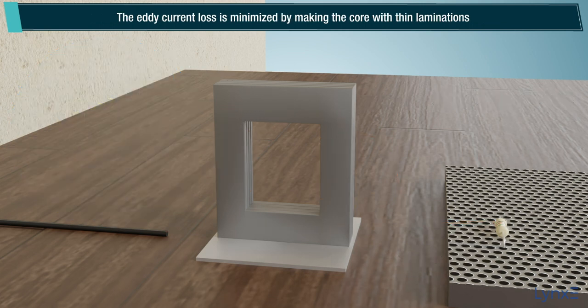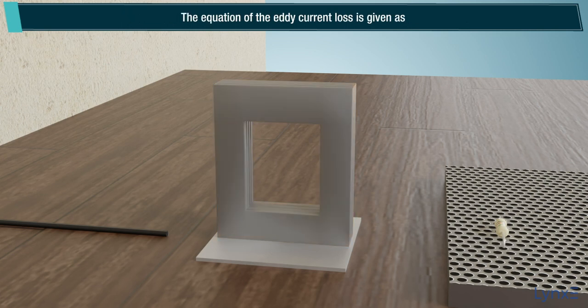The eddy current loss is minimized by making the core with thin laminations. The equation of the eddy current loss is given as: